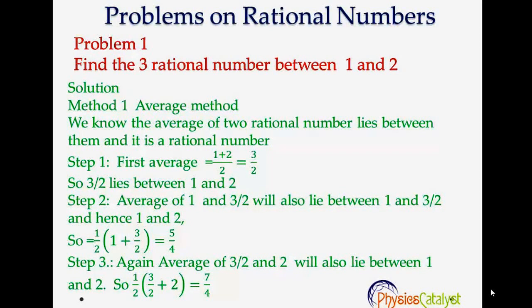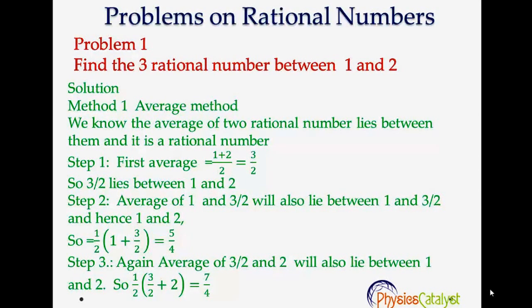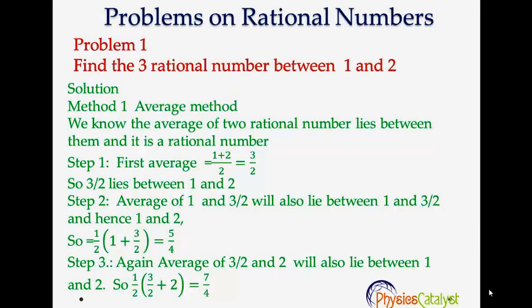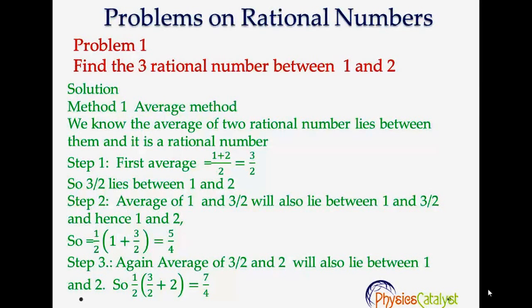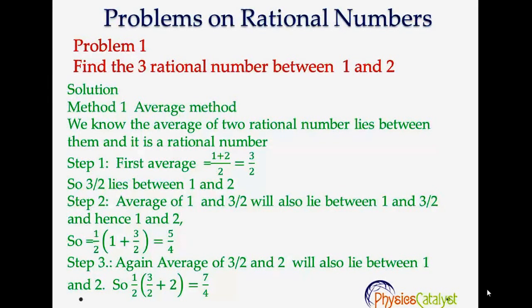Again, the average of 1 and 3/2 will also lie between 1 and 3/2, and hence between 1 and 2. So 5/4 would be a rational number. It will lie between 1 and 2.